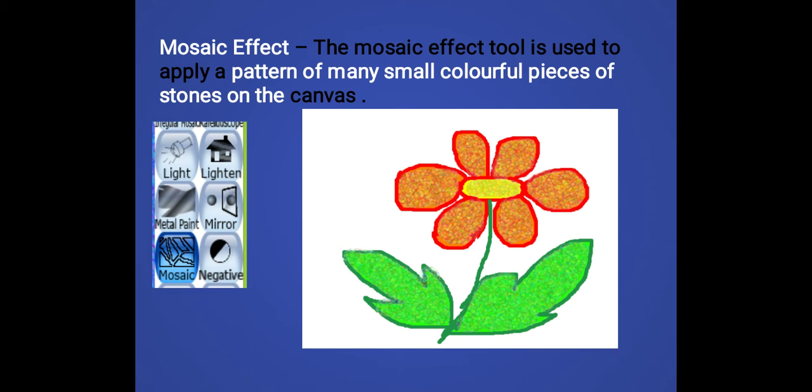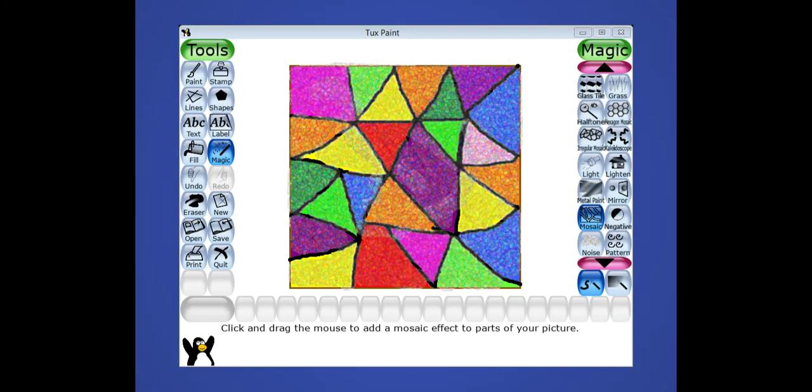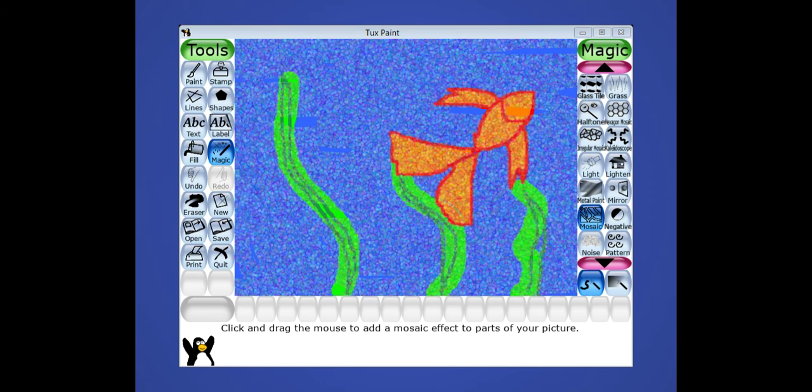So this is called the mosaic effect. And with the help of mosaic effect we can make a wonderful modern art. We can make our drawing more beautiful.